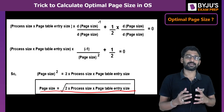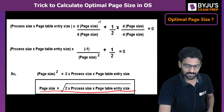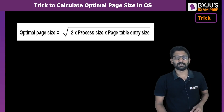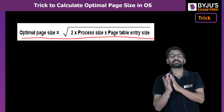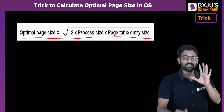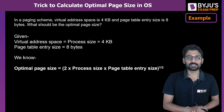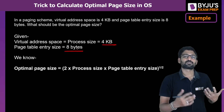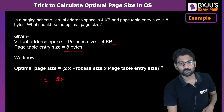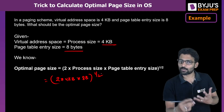You may wonder — do we need to remember all this derivation? Not required! For the GATE exam, just remember this formula: optimal page size = √(2 × process size × PTE size). That's it. For example, if process size is 4 KB and entry size is 8 bytes, simply substitute: √(2 × 4 KB × 8 bytes).